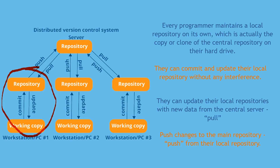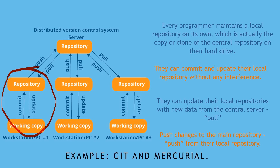When you want to update your code, you will pull from the server. And whenever you want to update the code on the server, you push it. So there are two operations — push and pull — that we use. Examples of distributed version control systems are Git and Mercurial.